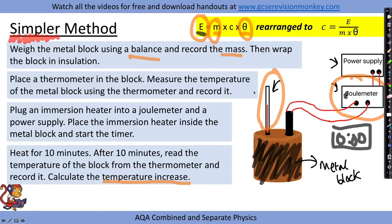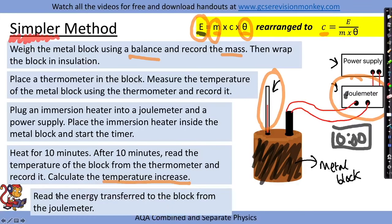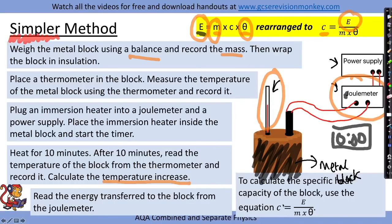Now we have three values to calculate specific heat capacity: energy from the joule meter, mass from the balance, and temperature change from the thermometer. Rearrange the equation to make specific heat capacity the subject: c equals energy divided by mass times temperature change. Read the energy transferred from the joule meter and put the numbers into the equation.